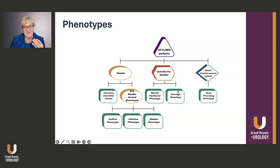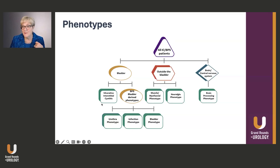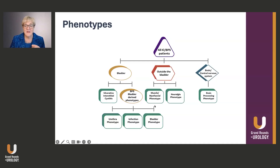The AUA has broken this down into four phenotypes, and there are multiple different ways to break down this large group. The first are patients that clearly have Hunner's ulcers or lesions — what we call ulcerative interstitial cystitis. All other patients felt to have symptoms coming from the bladder are called the bladder-centric phenotype. If symptoms come from outside the bladder, that group is called the muscle or myofascial phenotype. And then we have the brain or central sensitization phenotype.